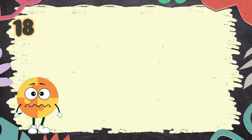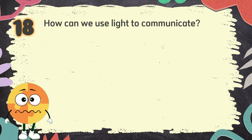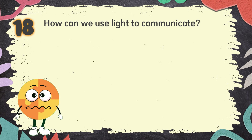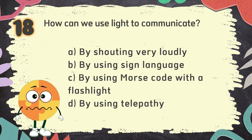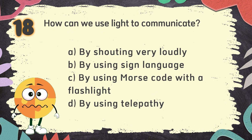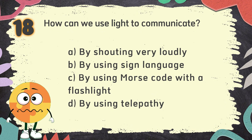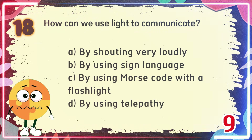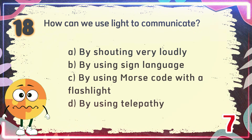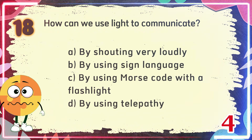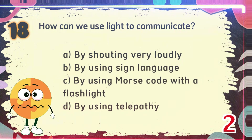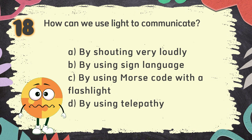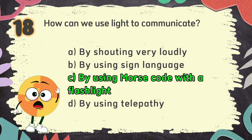Number 18. How can we use light to communicate? The choices are: A. By shouting very loudly, B. By using sign language, C. By using Morse code with a flashlight, D. By using telepathy. The correct answer is C: By using Morse code with a flashlight.